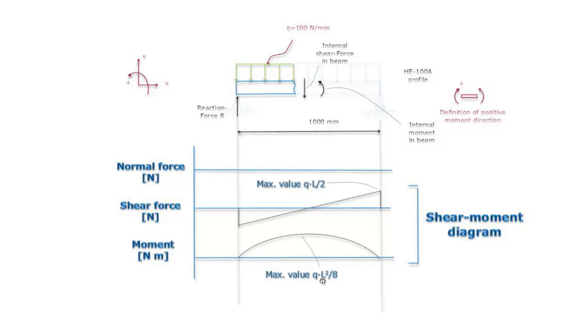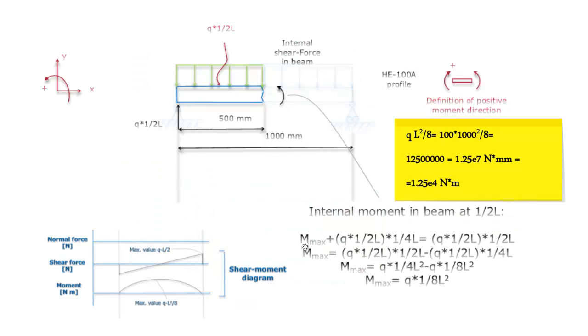The maximum value is Q, the distributed load times the length to the square divided by 8. And how this maximum value was calculated is written on the next page. Here you see the whole calculation of how to calculate the maximum moment with help of a virtually cut beam. You'll find that the maximum moment is the distributed load times the length to the square divided by 8.